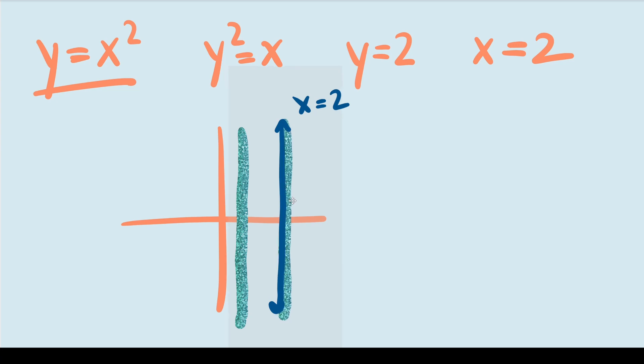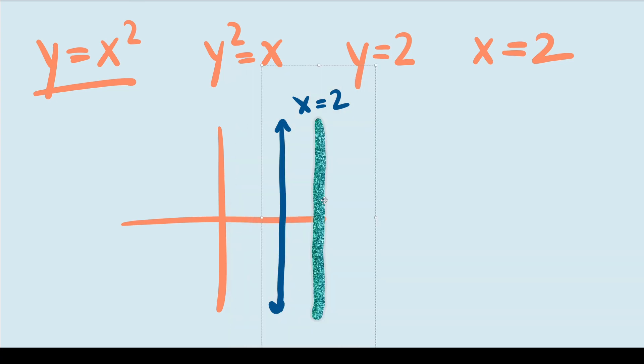And then once we go farther to the right, it's back to no intersection. So clearly, this doesn't meet the expectation of an algebraic function.